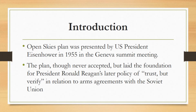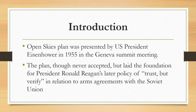The Open Skies Plan was presented by United States President Eisenhower in 1955 in the Geneva Summit meeting with representatives of France, Great Britain, and the Soviet Union. This was the time period when the world was facing the Cold War, and the United States and USSR were in indirect confrontation. The plan, though never accepted, laid the foundation for President Ronald Reagan's later policy of 'trust but verify' in relation to arms agreements with the Soviet Union.